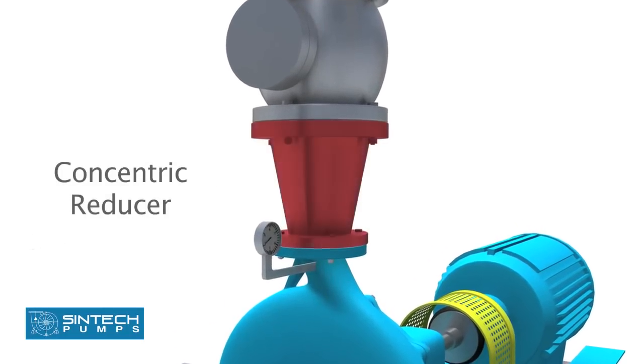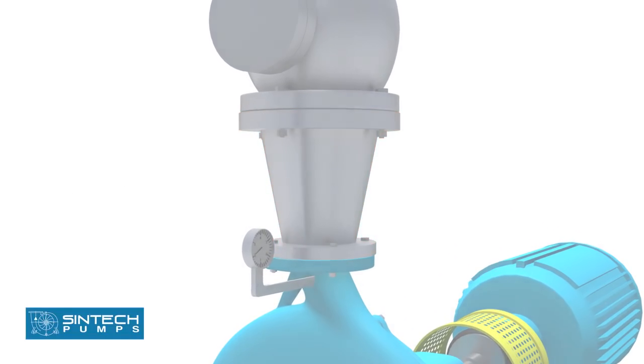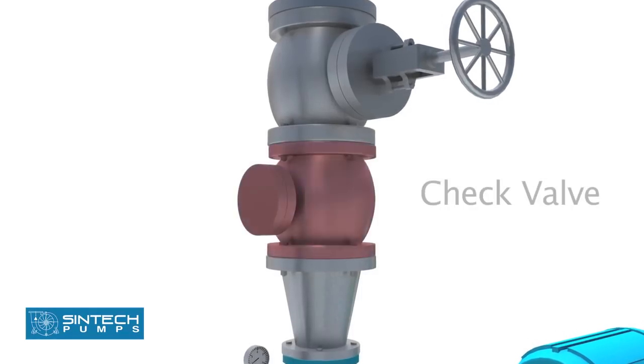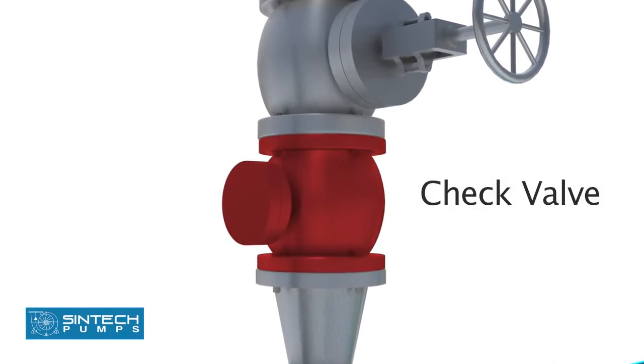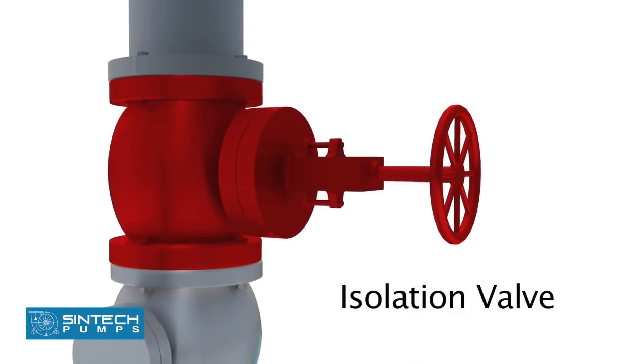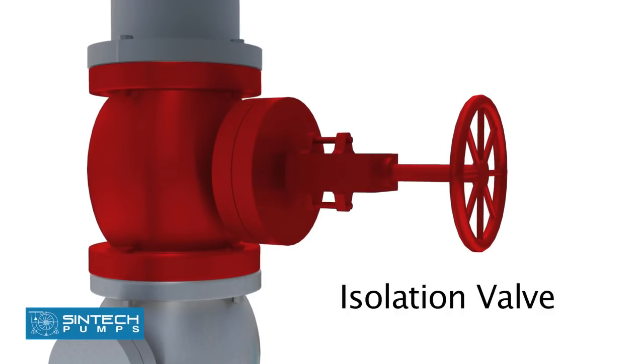Concentric reducers are installed in the discharge pipe to minimize friction losses. The jack valve used in the discharge should be of non-SLAM type to prevent hydraulic shocks. The isolation valve is provided downstream of the jack valve so that these can be taken up for servicing whenever required.